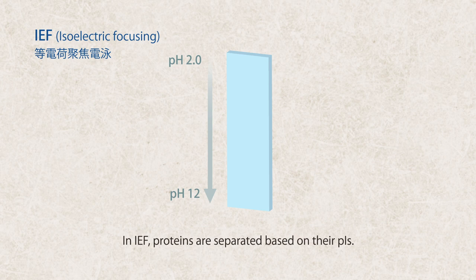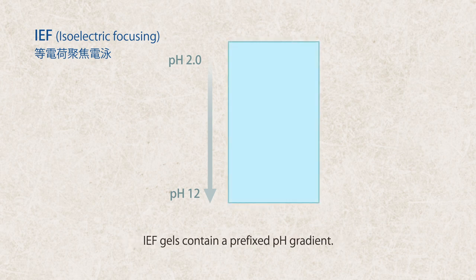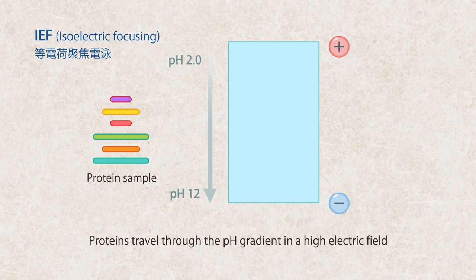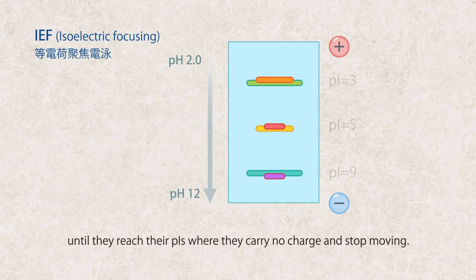In IEF, proteins are separated based on their PIs. IEF gels contain a prefixed pH gradient. Proteins travel through the pH gradient in a high electric field until they reach their PIs, where they carry no charge and stop moving.